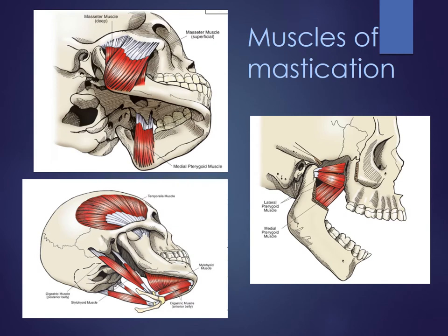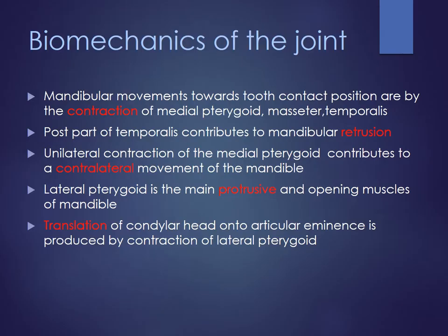The four most important muscles of mastication that help in movement of the TMJ are the masseter, temporalis, lateral and medial pterygoid. Mandibular movement towards tooth contact positions is by contraction of medial pterygoid, masseter and temporalis. The posterior part of temporalis contributes to mandibular retrusion. Unilateral contraction of medial pterygoid contributes to contralateral movement, and the lateral pterygoid is the main protrusive and opening muscle of the mandible. Translation of the condylar head into the articular eminence is produced by contraction of the lateral pterygoid.